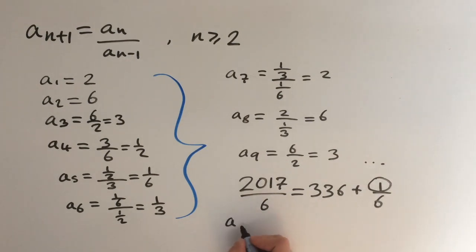And from this we can deduce that the 2017th term is going to be equal to the first term, and we know that the first term is equal to 2.